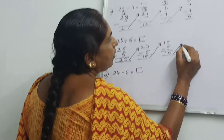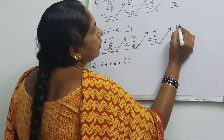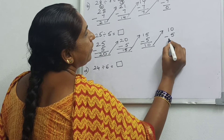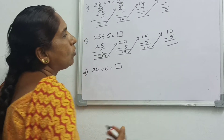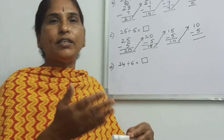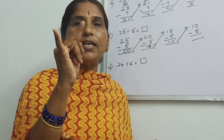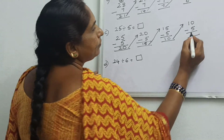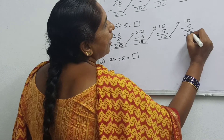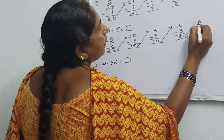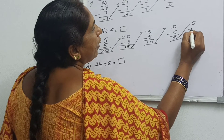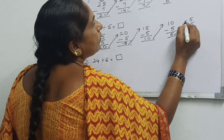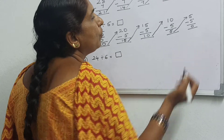Again, take 10 to the next box. 10 minus 5. Count again: 5 after — 6, 7, 8, 9, 10. How many? 5. Again take this 5 — again you have to subtract with divisor 5. 5 minus 5 is equal to 0.